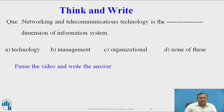Now I am going to ask a question to all the students. Networking and telecommunication technology is the blank in dimensions of information system. Option A: technology. Option B: management. Option C: organization. Option D: none of these. The correct answer is technology.